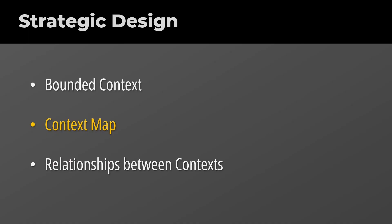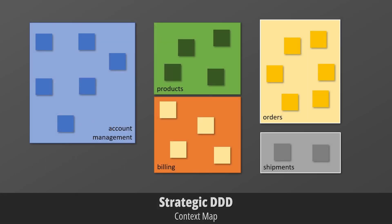Associations obviously exist also between bounded contexts and they can become complex very quickly. To address this issue, we can create a context map where we document the points of contact between the different models. An effective context map defines clear names and boundaries for each context that are shared by all teams. The relationships between models and teams are even more complex than those in tactical design, because they not only affect data and features, but most importantly, the way different software development teams integrate with each other.